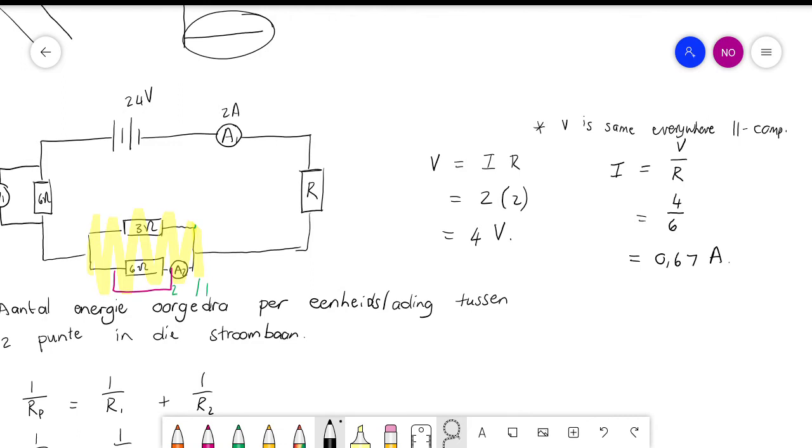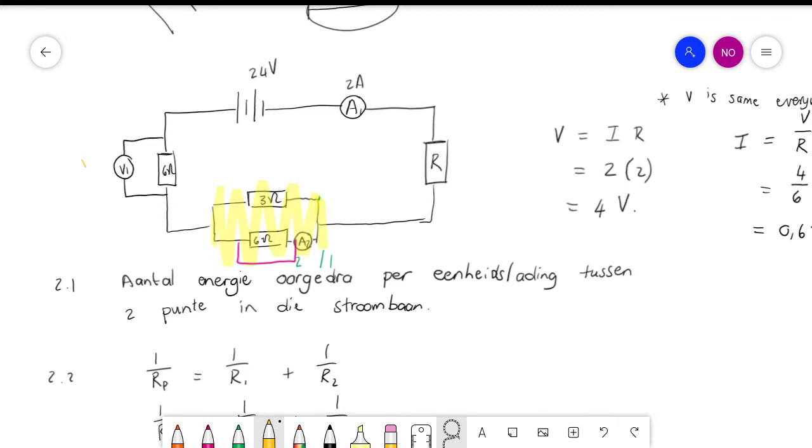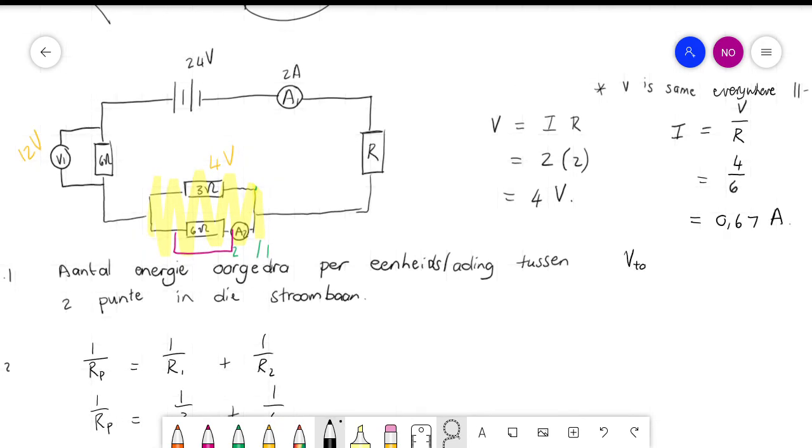Now they ask us for the resistance of R. So if you've done what we've done here, you already know that this voltmeter takes 12 volts and that this component takes 4 volts. And we know the potential differences must add up to 24. So in other words, V total will be equal to V1 plus V2 plus V3. That is 24. We know we've spent 12 and we know we've spent 4. So the potential difference going through resistor R will be here. 12? No, 8. It must add up to 24.